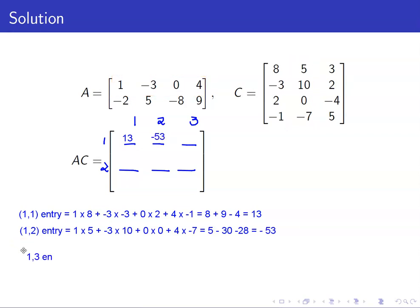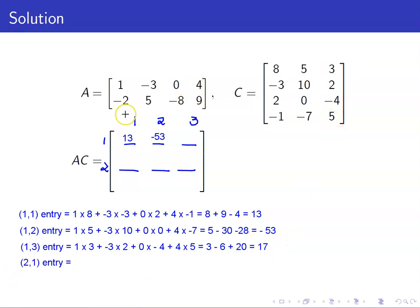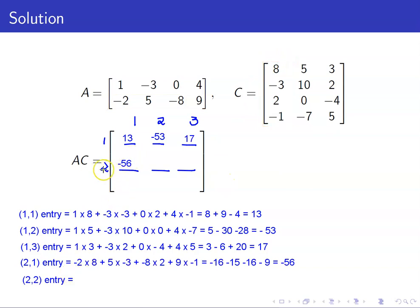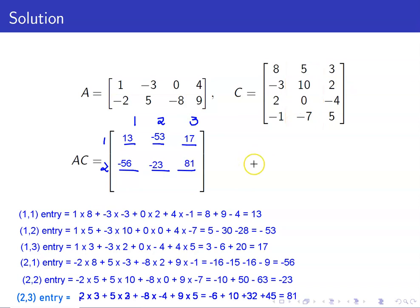The 1,3 entry equals 1 times 3 plus negative 3 times 2 plus 0 times negative 4 plus 4 times 5, and that is equal to 17. For the 2,1 entry, it's the 2nd row of A times the 1st column of C. Similarly, the 2,2 entry is the 2nd row times the 2nd column. When you compute the remaining entries, you will obtain these values.